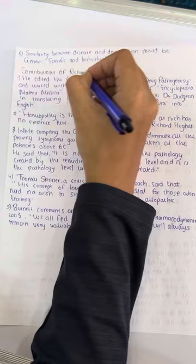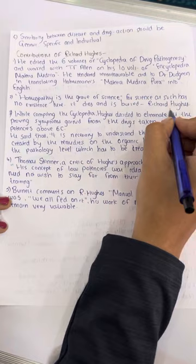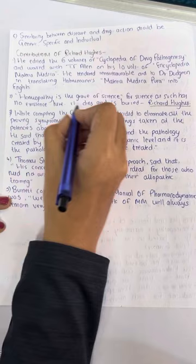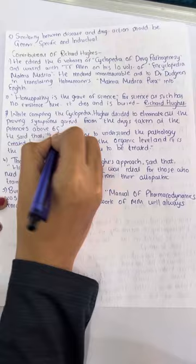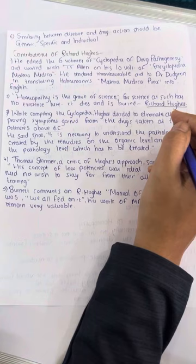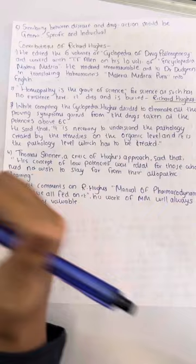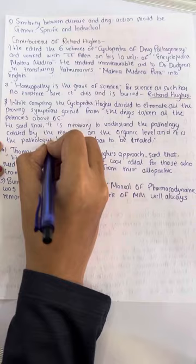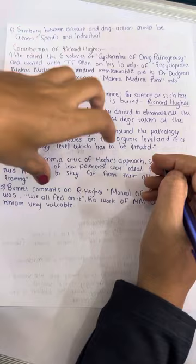A famous tagline by Dr. Richard Hughes is: "Homeopathy is the grave of science, for science as such has no existence here — it dies and is buried." Additionally, while compiling the Cyclopedia, Hughes decided to eliminate all the proving symptoms gained from drugs taken at potencies above 6C. The explanation he gave was that it is necessary to understand the pathology created by the remedies on the organic level, and it is the pathological level which has to be treated.